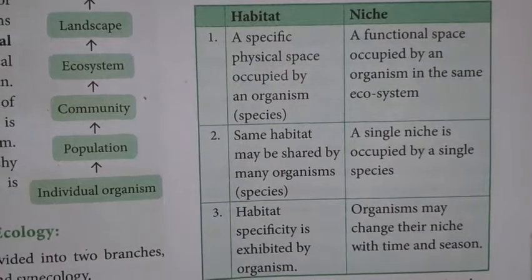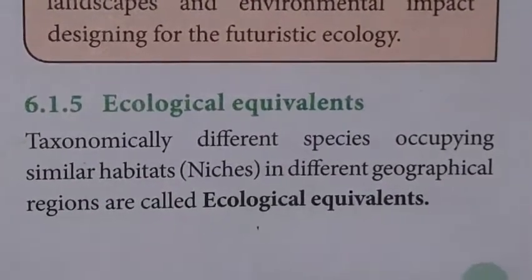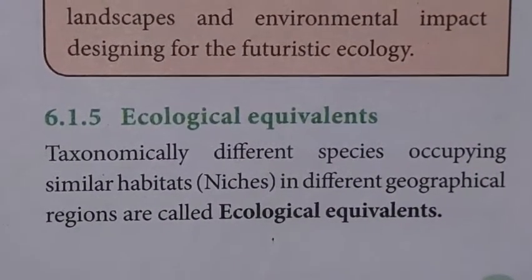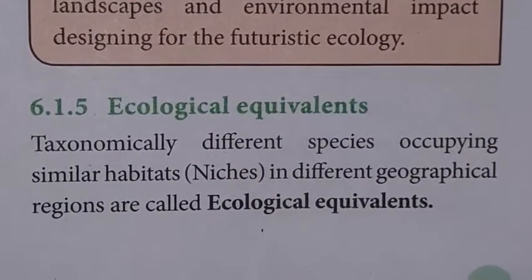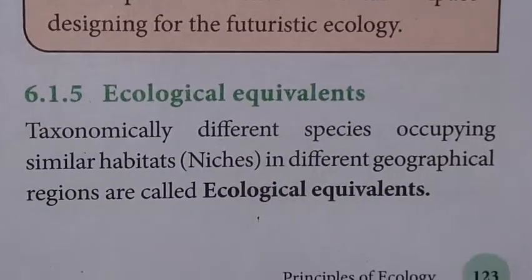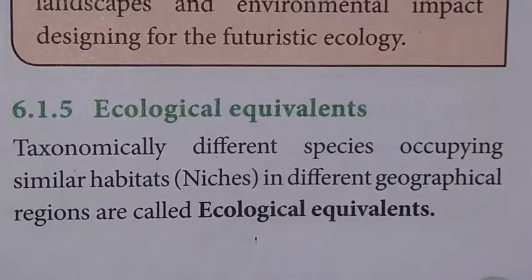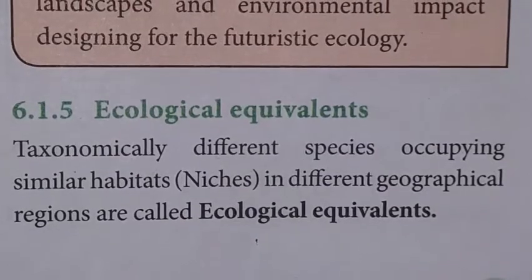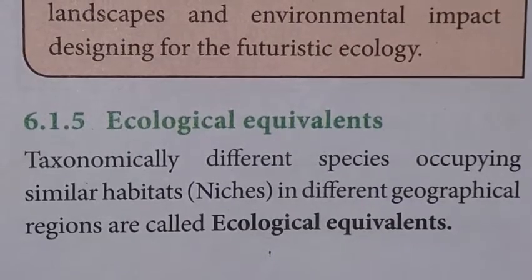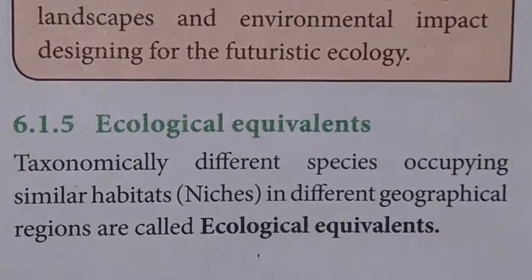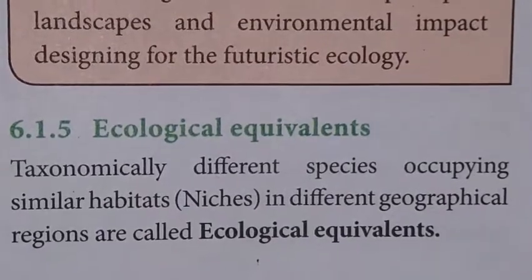Ecological equivalents are taxonomically different species occupying similar habitats or niches in different geographical regions. For example, in a forest ecosystem, different varieties of species all occupy the same habitat — the forest — and these are called ecological equivalents.